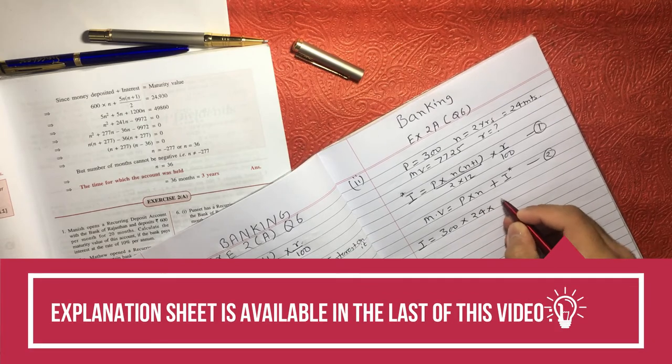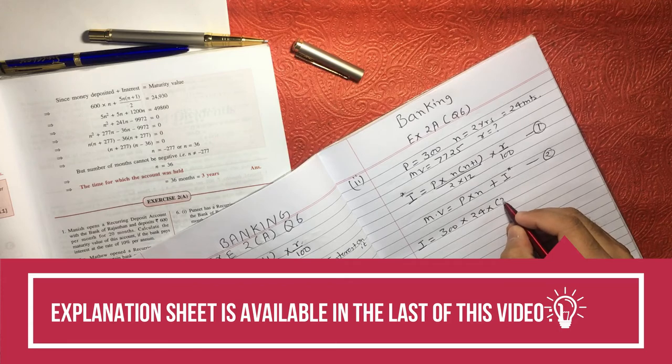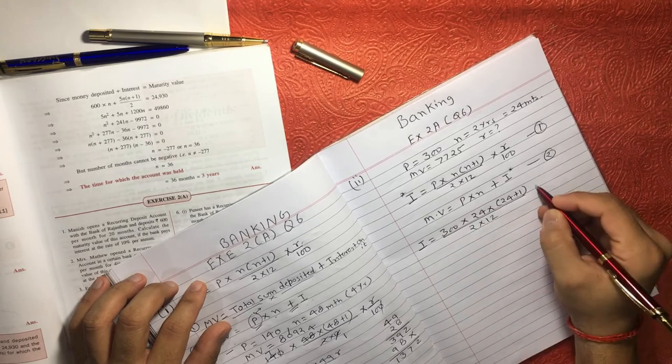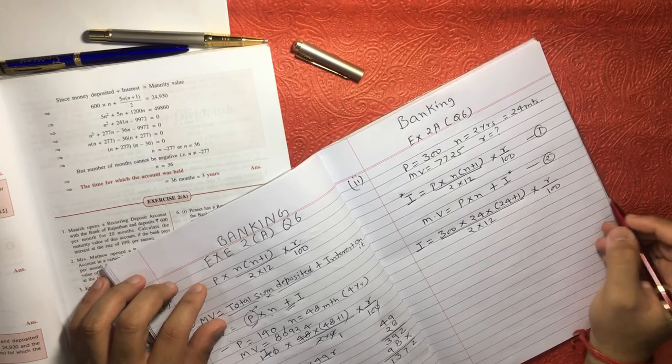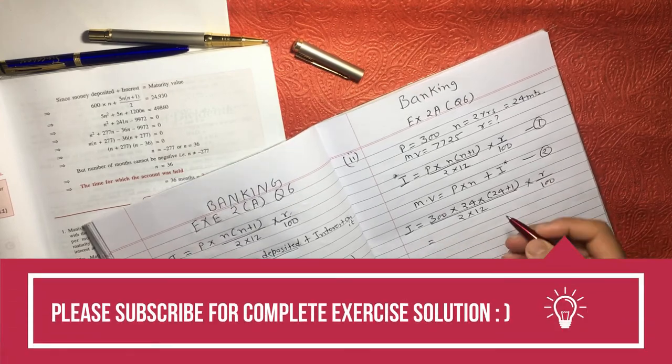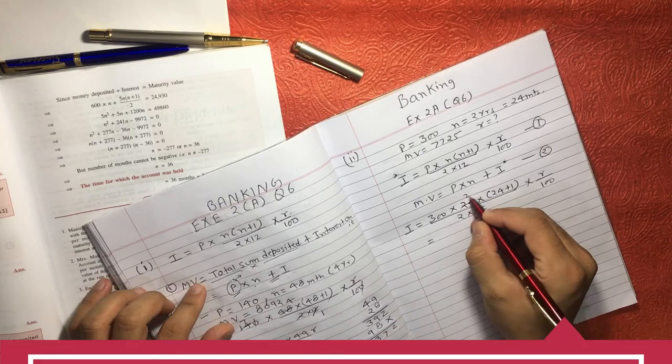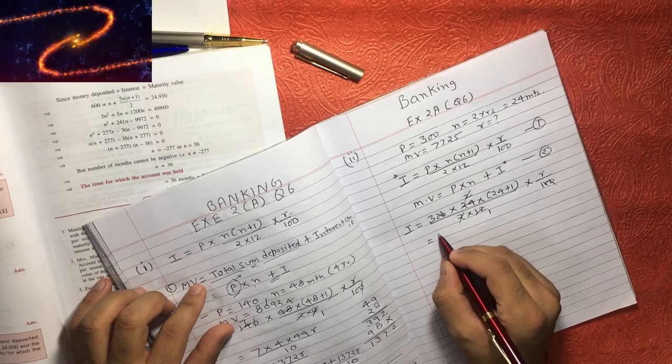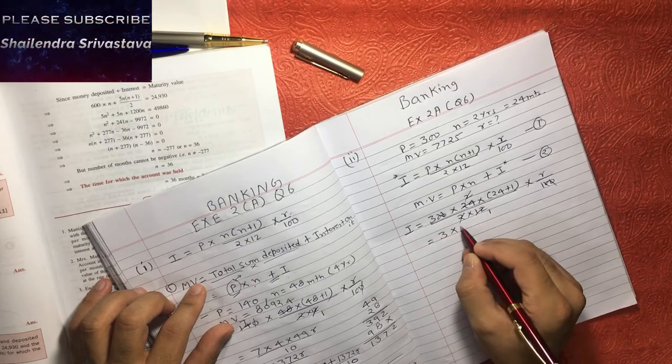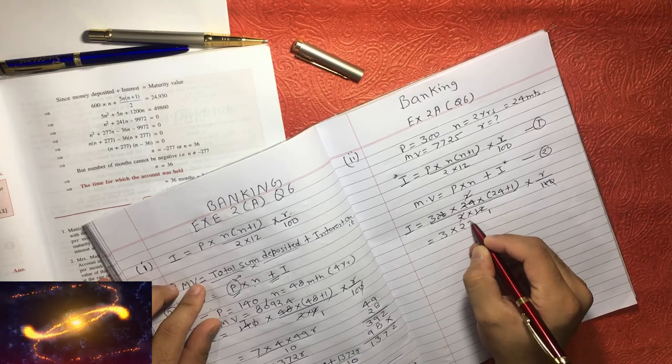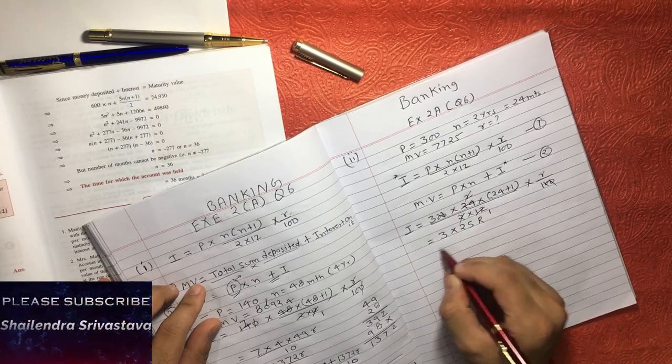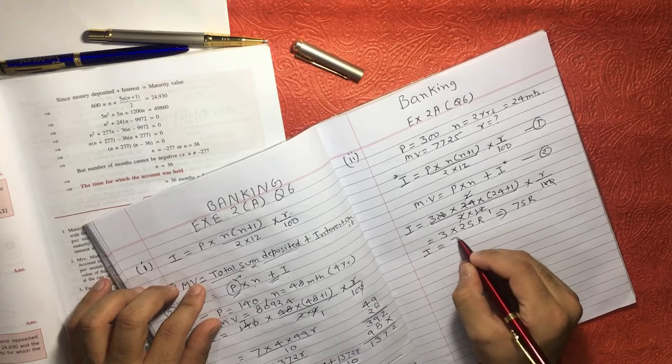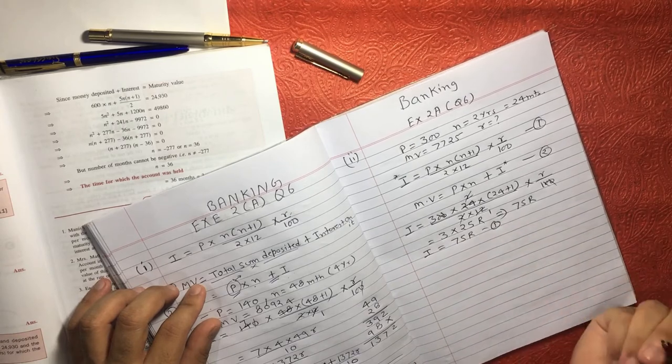So 24 into N. N is what? 24 again. Then plus 1 oblique 2 into 12 into R. R we don't know, oblique 100. Now if we solve this, 12 and 12, 2 and 24, 2 and 2 cancel, zeros cancel. So this will become what? 3 into 25R. So this becomes what? This is 75R. So I is equal to 75R. This is your equation number 1.